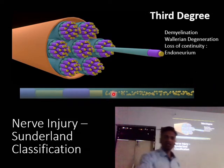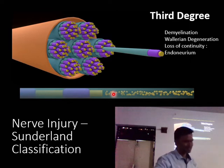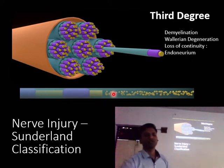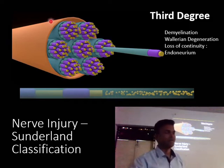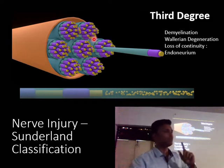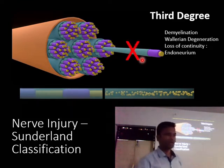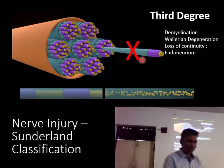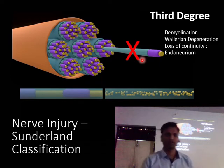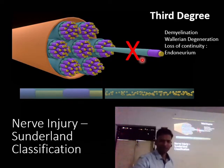In Sunderland's third degree, we again have demyelination and Wallerian degeneration, plus loss of continuity of the endoneurium. The epineurium and perineurium are still intact, but the endoneurium is completely discontinued — this can be caused by stretching or blunt trauma.